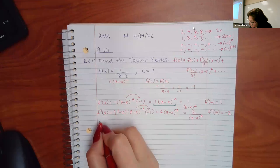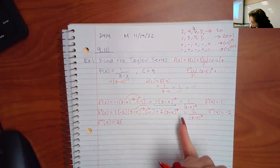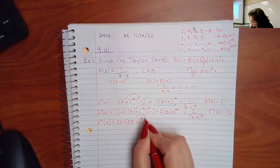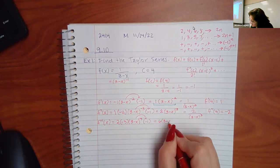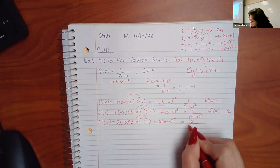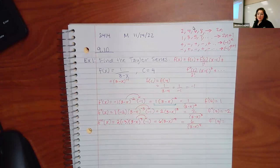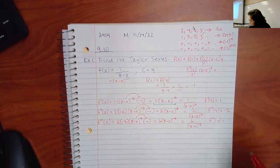So I'll do the third derivative. I keep the constant multiplier, bring down the exponent of negative 3, decrease it by 1 to negative 4, and apply the chain rule factor of negative 1. That gives positive 6 times (3−x)^(−4), or 6/(3−x)⁴. When I plug in 4, I get 6/(3−4)⁴ = 6/(−1)⁴ = 6.